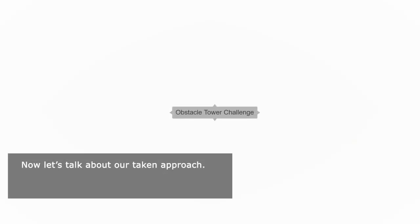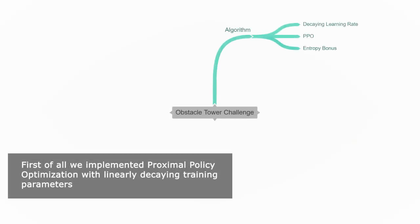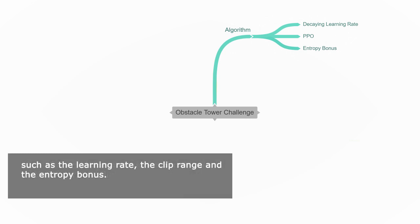Now let's talk about our approach. First of all, we implemented proximal policy optimization with linearly decaying training parameters such as the learning rate, the clip range, and the entropy bonus.